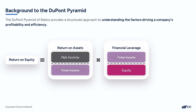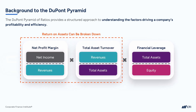Now let's break down the return on assets ratio to get the standard three-ratio or three-lever DuPont analysis. Return on assets can be broken down into net profit margin and total asset turnover — we've seen both of these ratios already. When multiplied together, revenues in the net profit margin gets canceled out by revenues in the total asset turnover ratio. Most financial analysts actually stop with the three-ratio or three-lever approach.